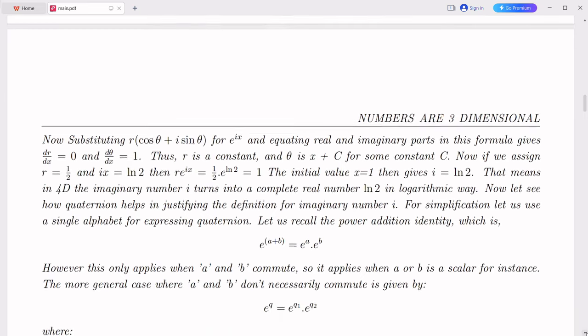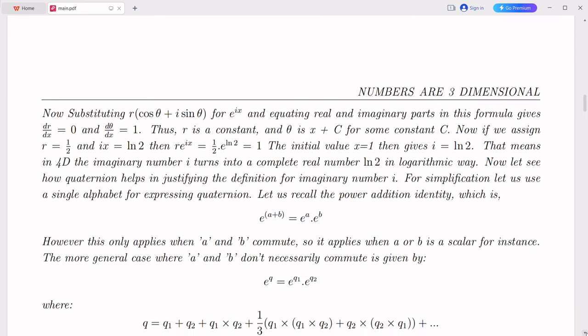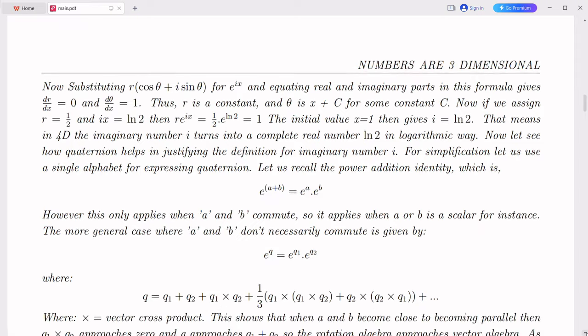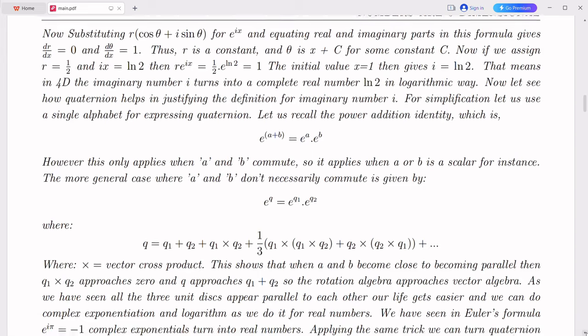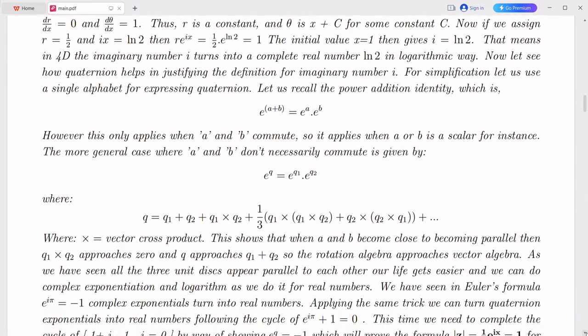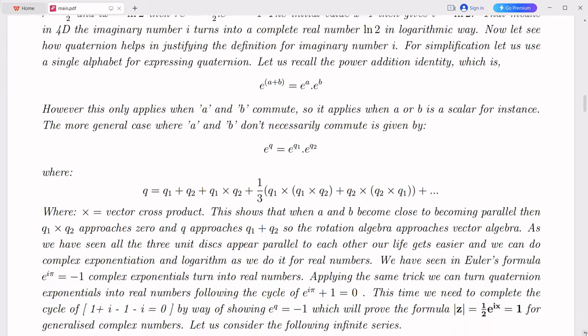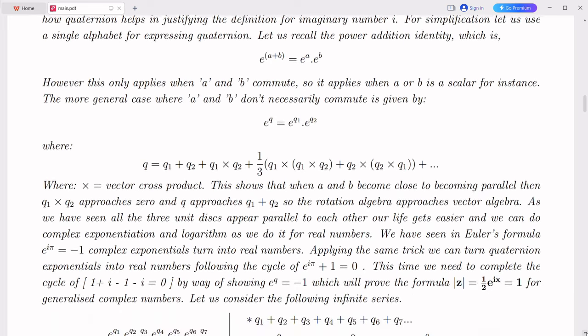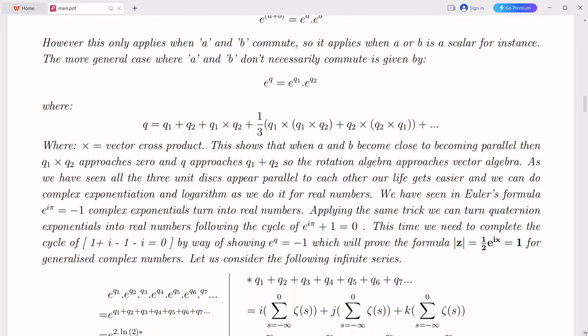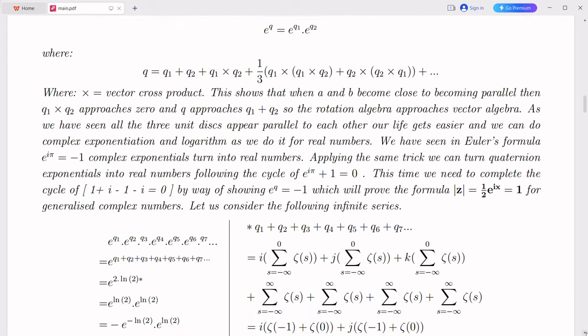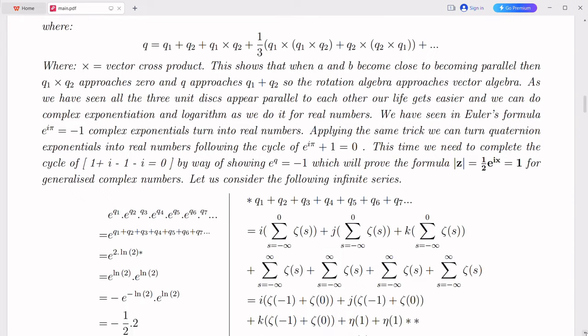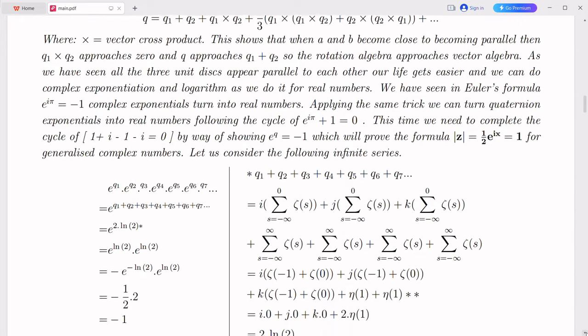Similarly, the Goldbach conjecture, which states that every even integer greater than two can be expressed as the sum of two prime numbers, could also be approached using the prime number theorem and the dual nature of numbers. By analyzing the distribution of prime numbers and their properties, we can provide a minimal proof that supports the Goldbach conjecture. It's important to note that while these minimal proofs may provide insights in a deeper understanding of number theory problems,